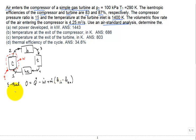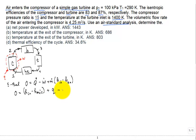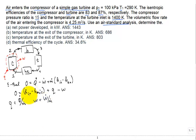Rewriting: zero equals H_in minus H_exit plus lowercase q minus lowercase w, where lowercase q is Q-dot divided by m-dot, and lowercase w is W-dot divided by m-dot — those are the specific heat transfer and specific work transfer for each component. The key is to get the enthalpies at all of the states.